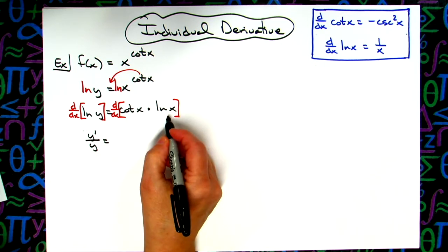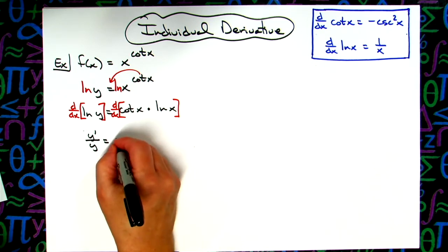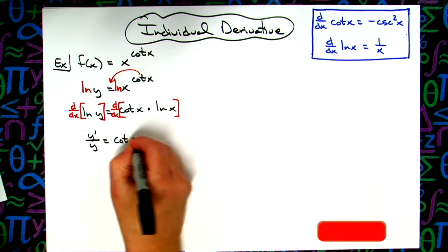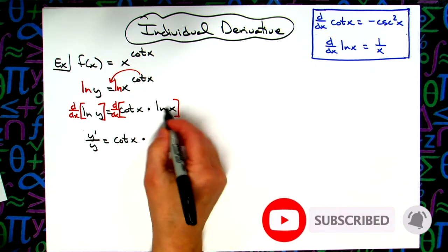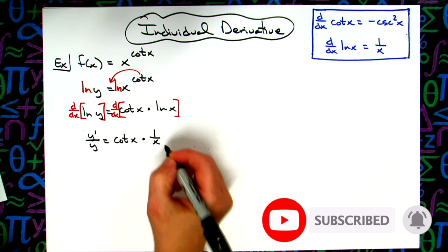We're going to do product rule right here. So we'll have cot(x) times the derivative of the second function, which is 1/x.